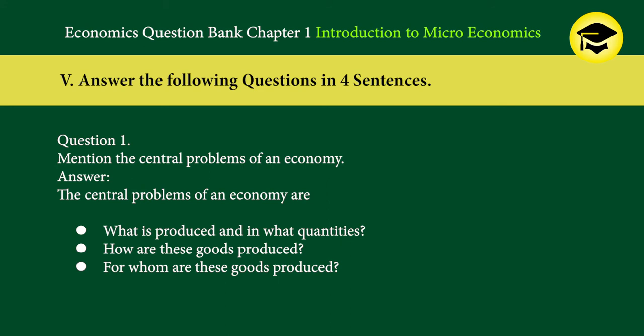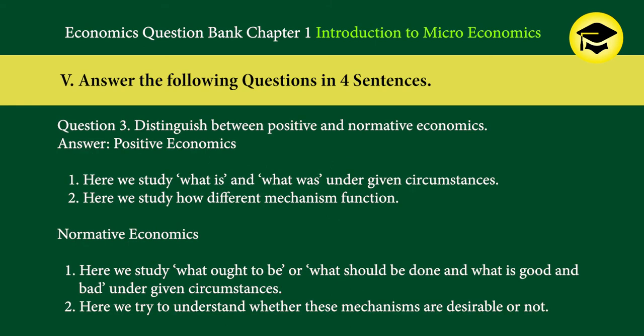Answer the following questions in four sentences. Question 1: Mention the central problems of an economy. Answer: The central problems of an economy are — what is produced and in what quantities, how are these goods produced, and for whom are these goods produced. Question 3: Distinguish between positive and normative economics. Positive economics: we study what is and what was under given circumstances and how different mechanisms function. Normative economics: we study what ought to be or what should be done, and what is good and bad; we try to understand whether these mechanisms are desirable or not.